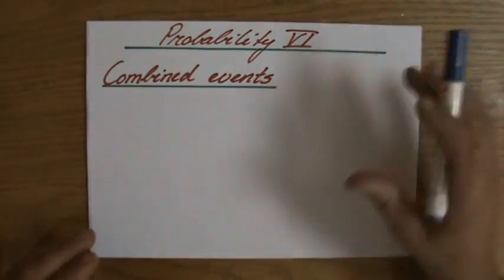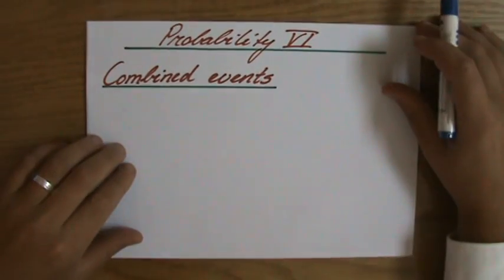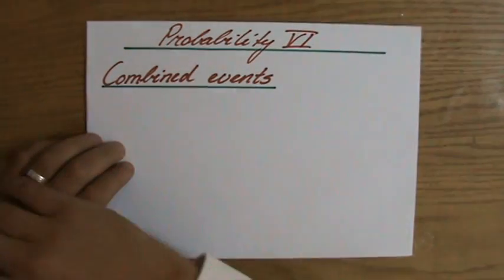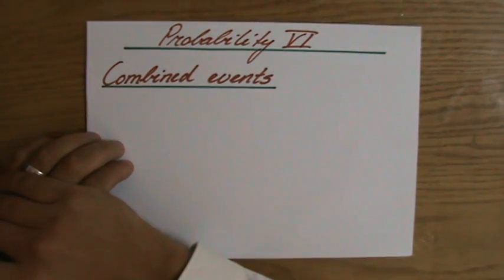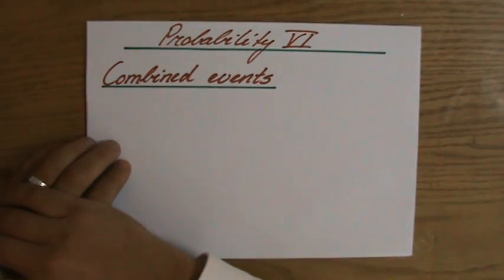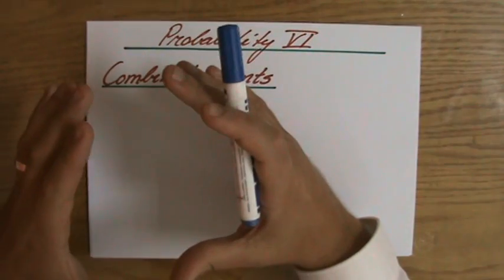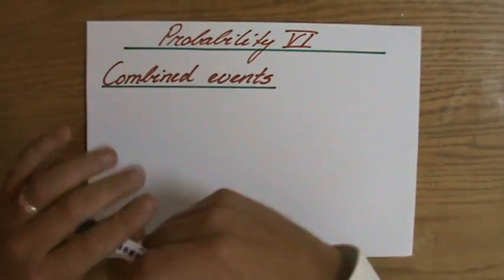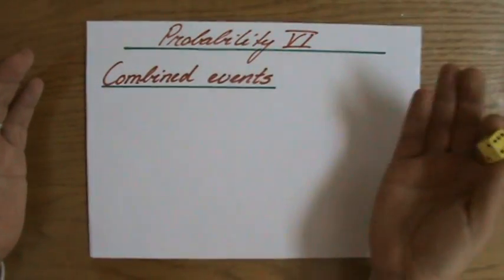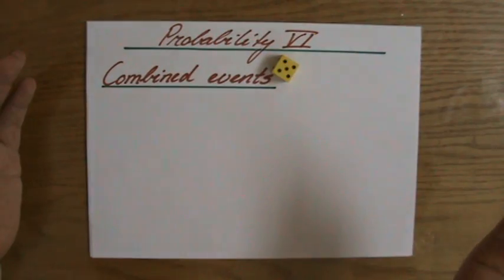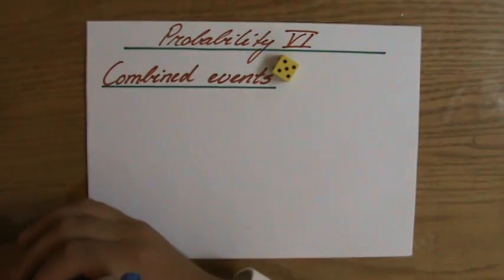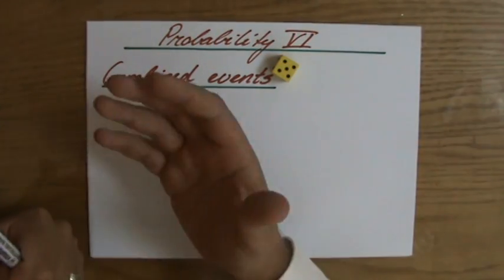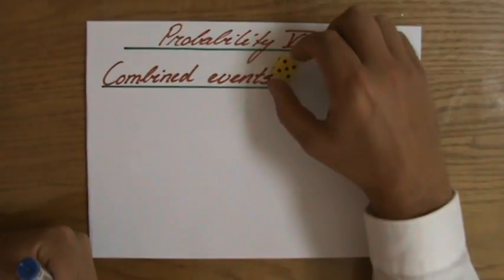Before going to some example questions, I want to show you what we mean with combined events. Because so far, we've been talking about independent events occurring. For instance, what is the chance of rolling a 5? Well, that was a chance of 1 over 6. It was independent — it stood alone in the event. It was just one thing.